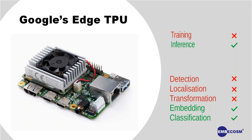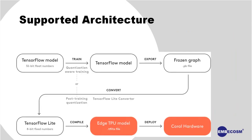We are leaving detection, localization, and transformation as things to be done off the TPU on our large machines, and then feeding the TPU only the properly transformed, unified faces for embedding and then classification. Broadly, the practical workflow is: take your favorite TensorFlow model, train it, export it to the format the Edge TPU likes, get it compiled, stick it on your TPU, and the TPU does its magic.